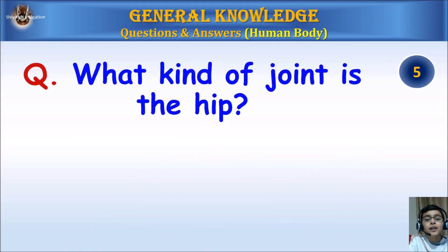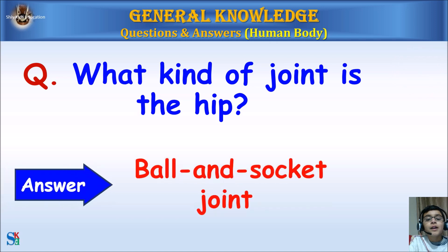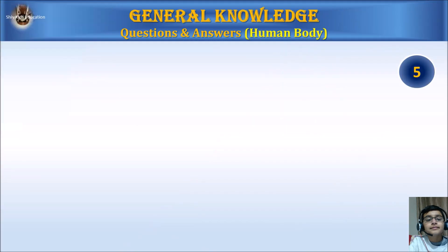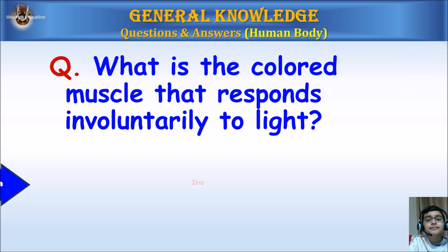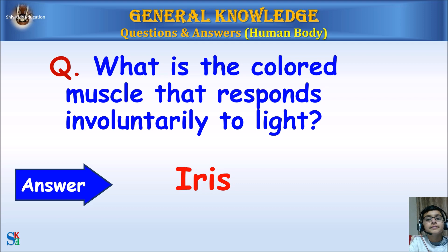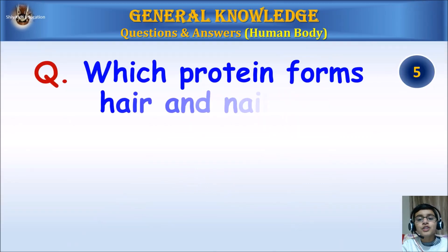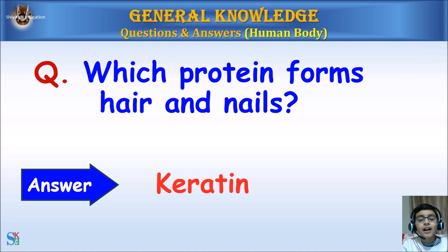What kind of joint is the hip? Answer: Ball and socket joint. What is the colored muscle that responds involuntarily to light? Answer: Iris. Which protein forms hair and nails? Answer: Carotene.